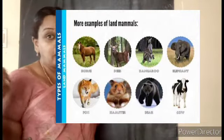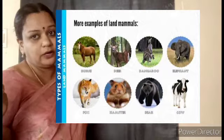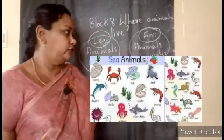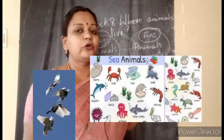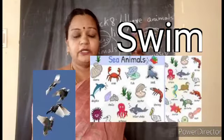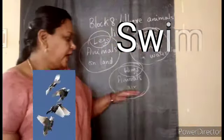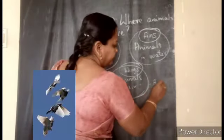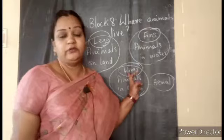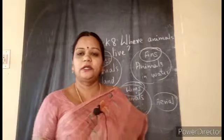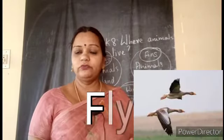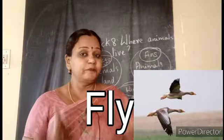Animals on land are called terrestrial animals — just like terrestrial plants — and most of them move using their legs to get their food. Animals living in water are called aquatic animals; fishes have fins to move to get their food. And animals in the air are called aerial animals — birds use their wings to move in search of food, water, and to escape from enemies.